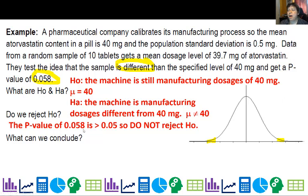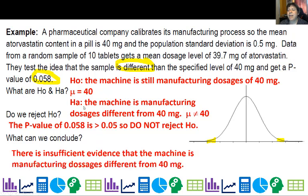I'm not going to change my mind from the assumption that the machine is working. High probability is not impressive. We don't change our mind from the null to the alternate. So we say there's insufficient evidence that the machine is manufacturing dosages different from the 40 mg of atorvastatin.